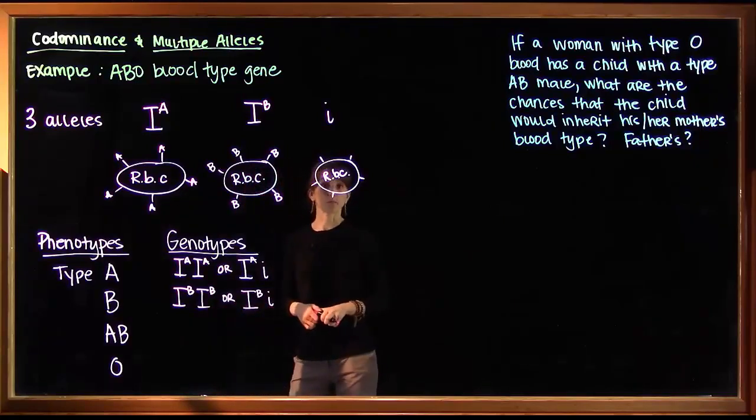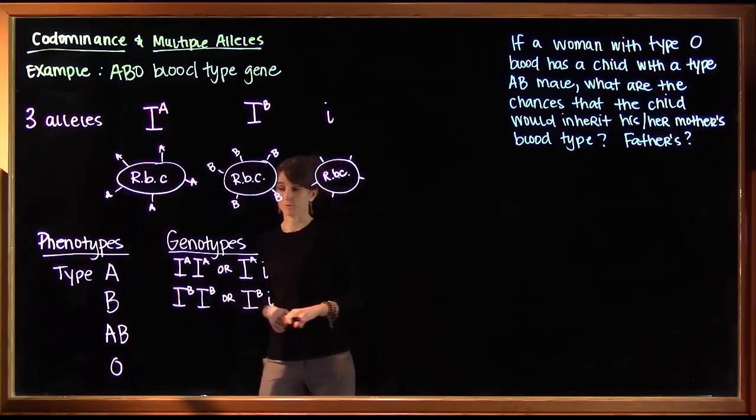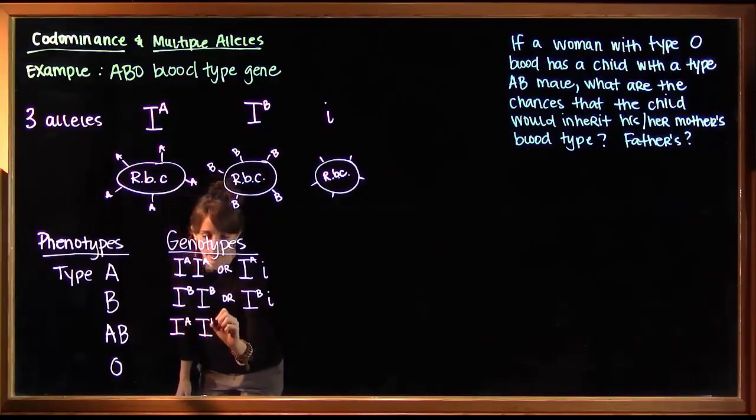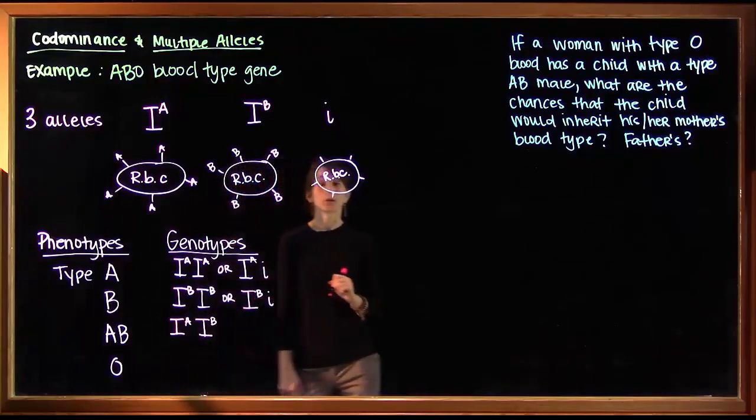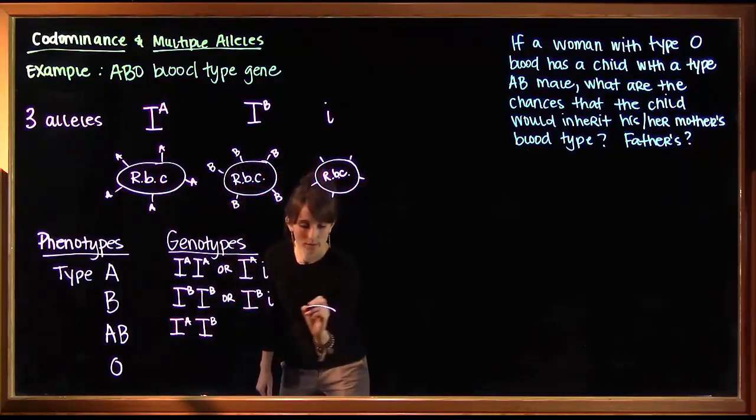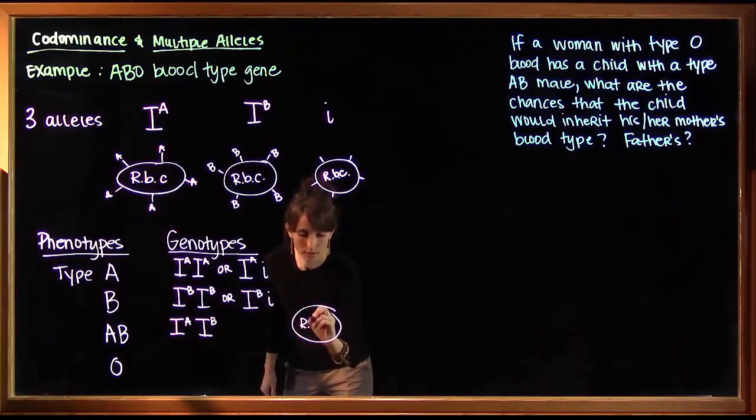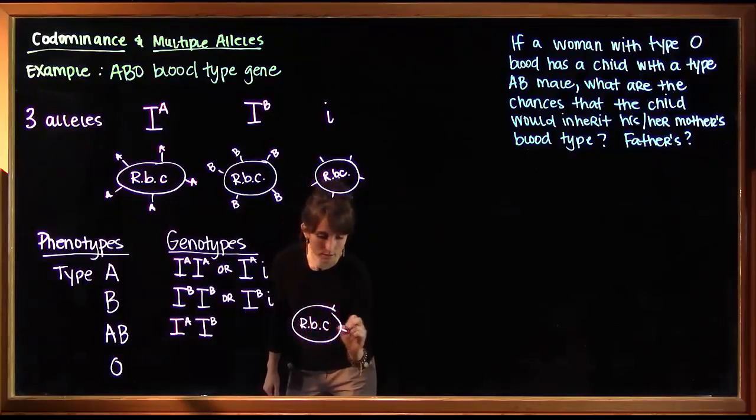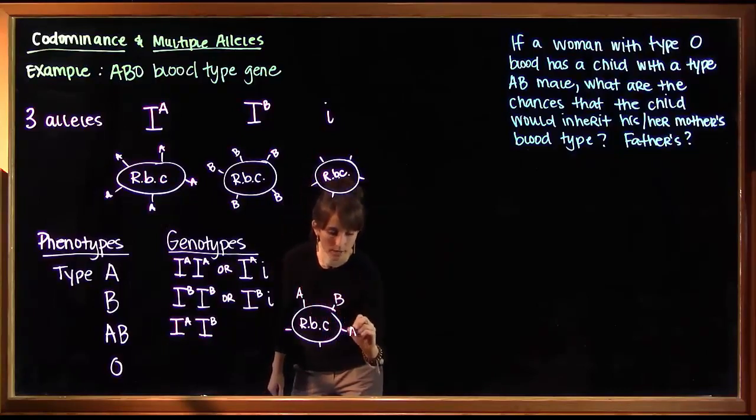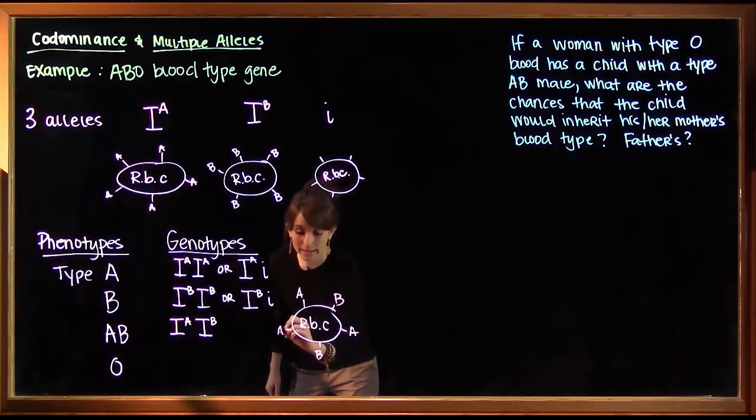If a person has type AB blood, there's only one option for their genotype. They have an I, A and an I, B. So their red blood cells are not going to look like any of these. What they will have is a combination of A's and B's.